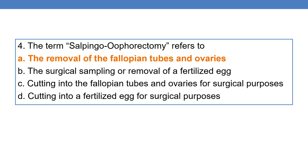Next question: the term salpingo-oophorectomy refers to. As discussed, ectomy means surgical removal. Salpingo-oophorectomy means removal of fallopian tubes and ovaries. Salpingo is the root word for fallopian tubes, whereas oophoro is the root word for ovaries.